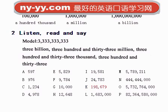K: One hundred and ninety-eight thousand six hundred and seventy-nine. L: One million six hundred and eighty-three thousand. M: Five million seven hundred and eighty-nine thousand.